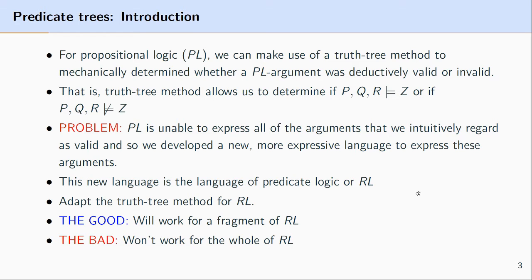To simplify things quite a bit, the downside is that it won't work for the entirety of the language. There are some arguments expressible in predicate logic where the truth tree method will just repeat endlessly and won't give us an algorithmic way of determining whether or not an argument is an entailment or non-entailment.